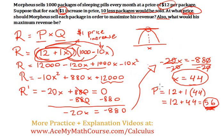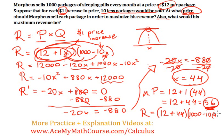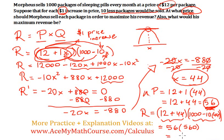What is the maximum revenue? We plug x = 44 back into the revenue function: (12 + 1×44) times (1000 − 10×44), which is 56 times (1000 − 440), giving 56 times 560, for a total maximum revenue of $31,360. That is the maximum revenue Morpheus can make selling the packages of sleeping pills.